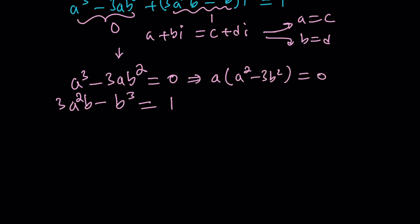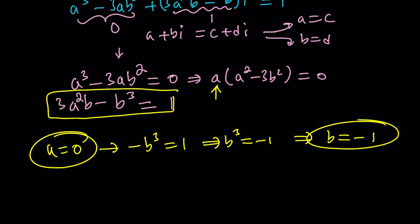From here, we consider two cases. Case one, A equals zero. Now, if A is equal to zero with the second equation, we're getting negative B cubed equals one, which implies B cubed equals negative one, which implies B equals negative one. Awesome. So A equals zero implies B equals negative one. That gives us an ordered pair, which I will write at the end.